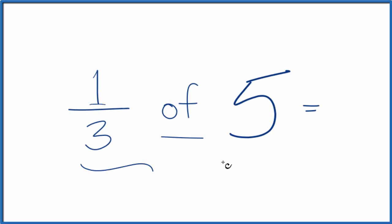Let's find one-third of five. Perhaps the easiest way to do this is to think of 'of' as multiplication.